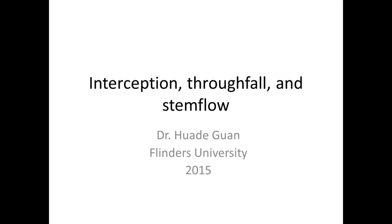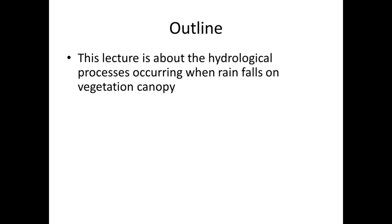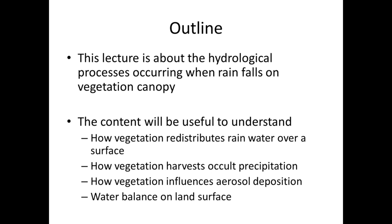This is Huata Guan from Flinders University. Today we're going to talk about the hydrological processes occurring when rain falls on vegetation canopy. This content will be useful to understand how vegetation on the land surface redistributes rainwater, how vegetation harvests or captures precipitation, and how vegetation influences aerosol deposition. Overall, it helps us understand the water balance on land surface.